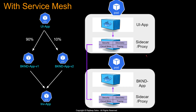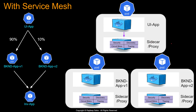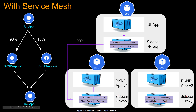Now that the sidecar proxy handles all pod-to-pod traffic, doing canary is quite simple. The sidecar can say send 90% of traffic to the backend app version one sidecar and 10% to backend app version two sidecar. And this is just one example — you can also implement tracing, circuit breaker, and authentication/authorization using this sidecar.